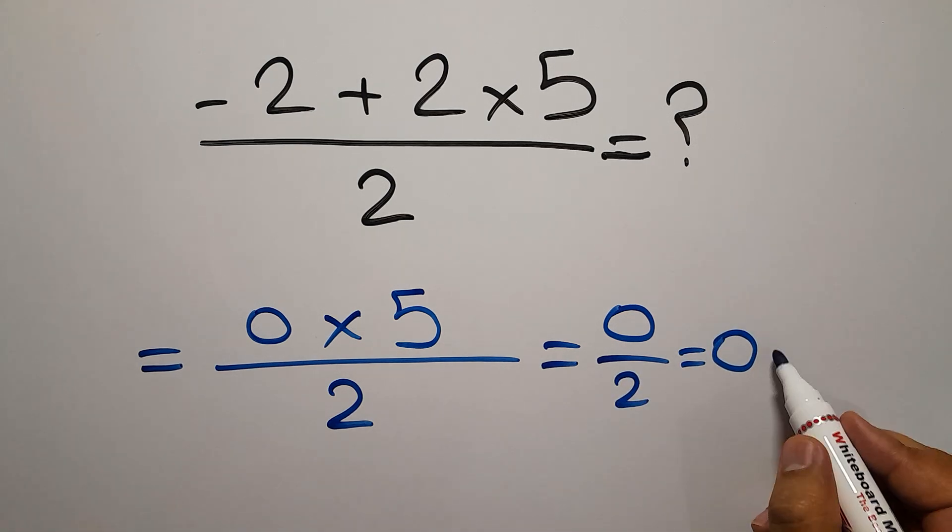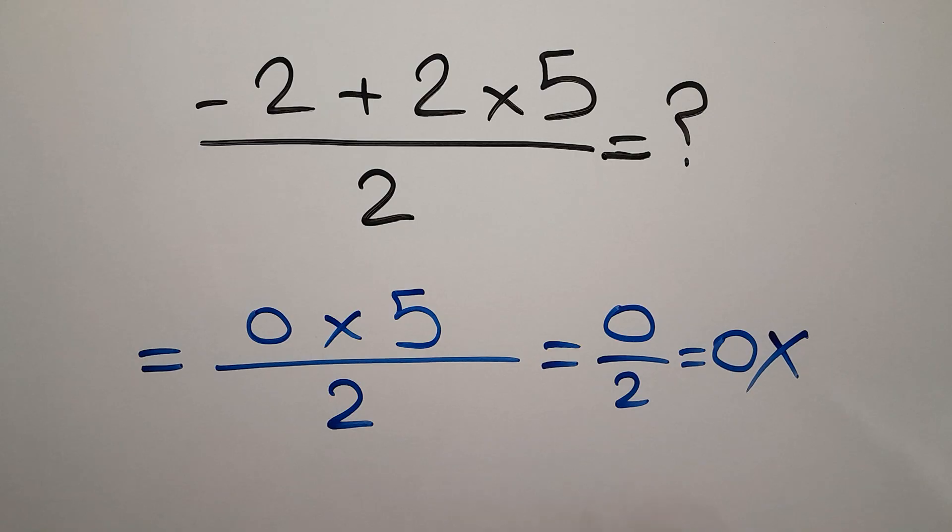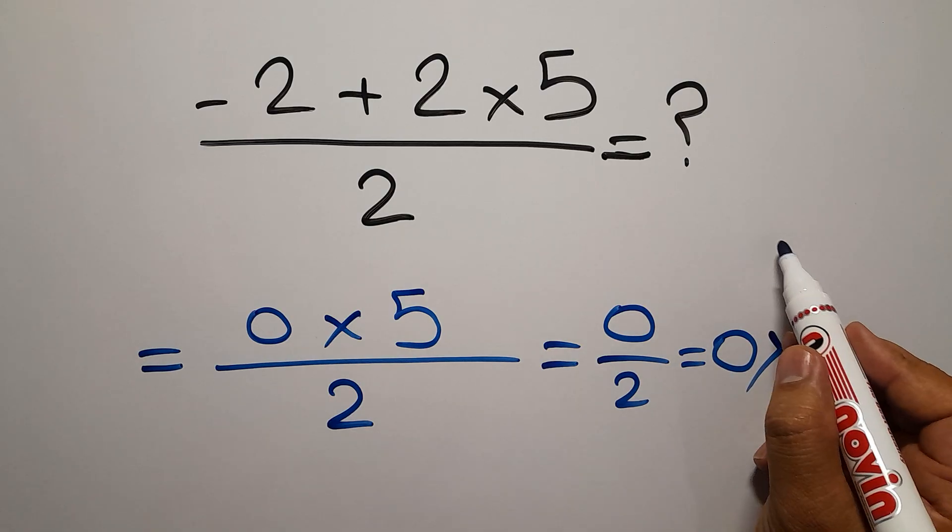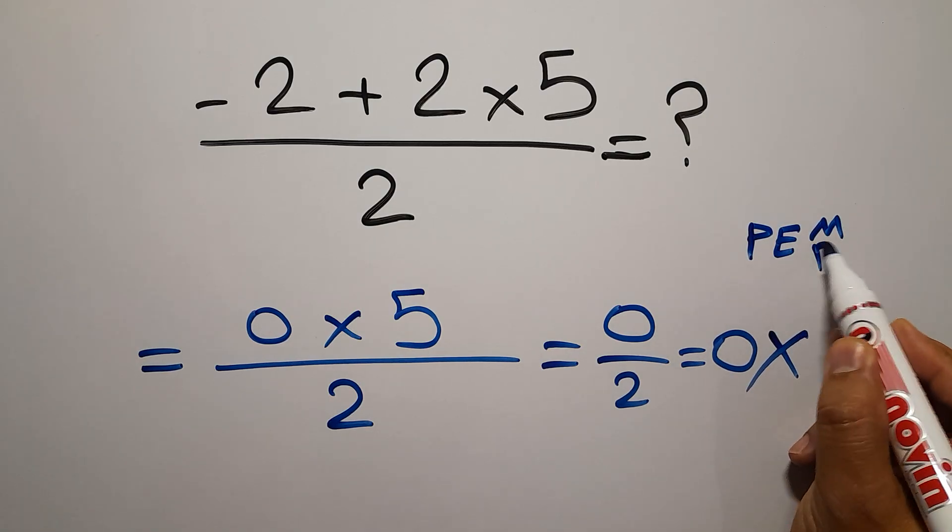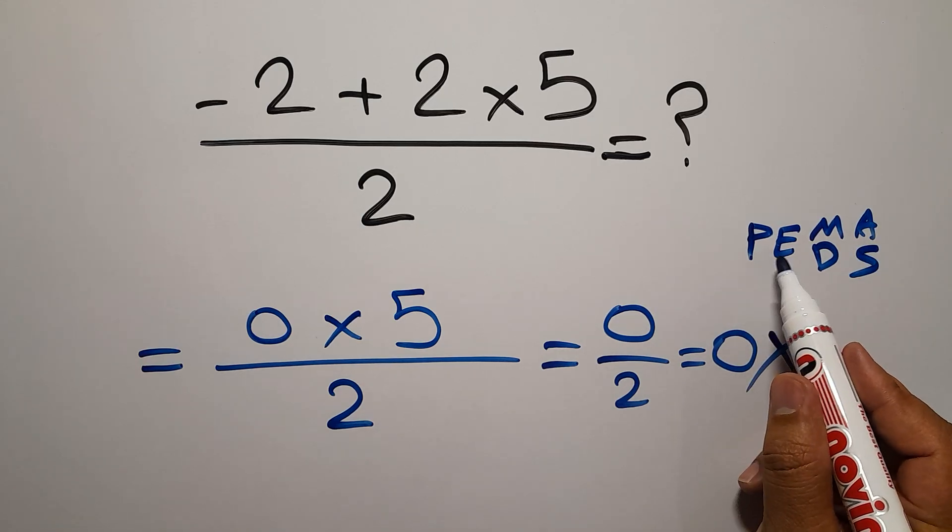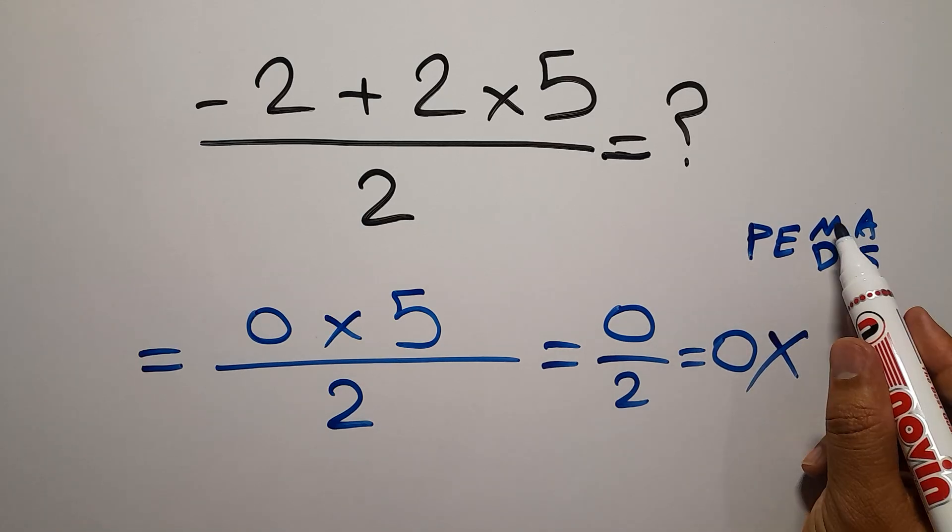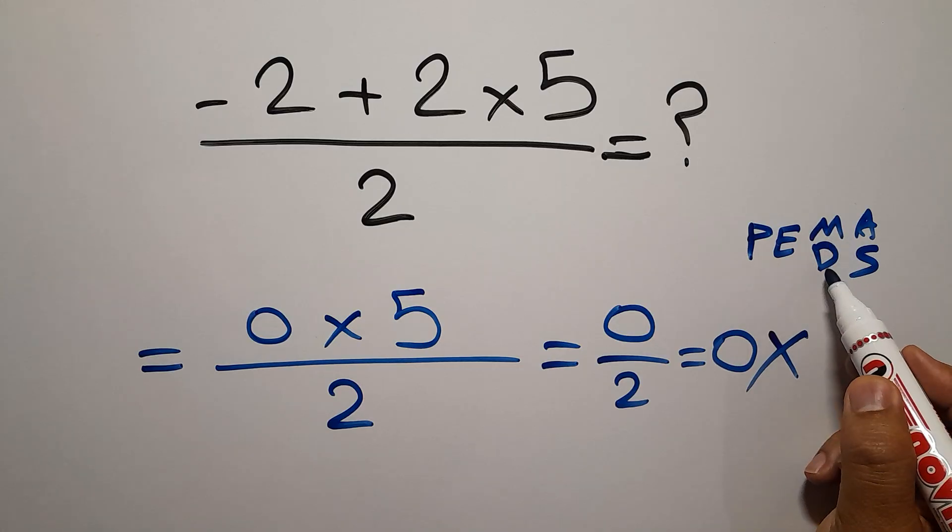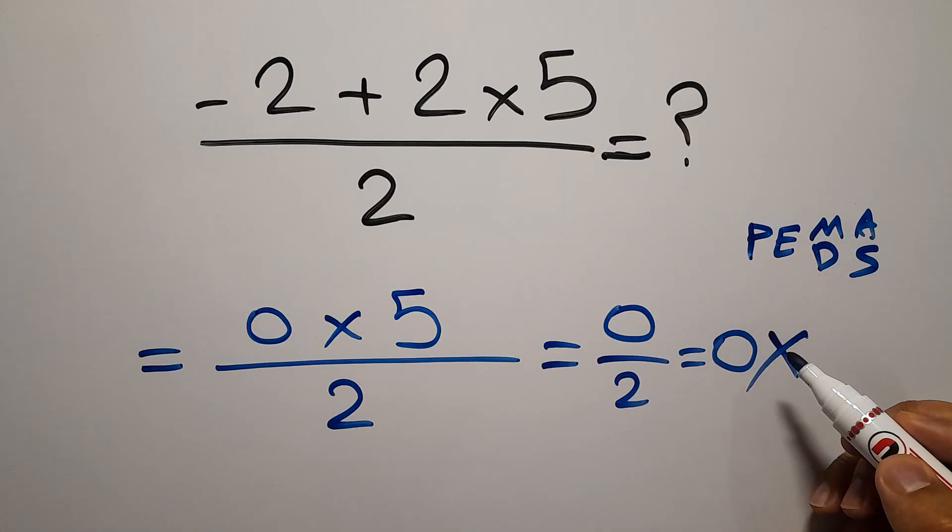This answer is not correct because according to the order of operations, which is PEMDAS: P stands for parentheses, E stands for exponents, M and D stands for multiplication and division, and A and S stands for addition and subtraction.